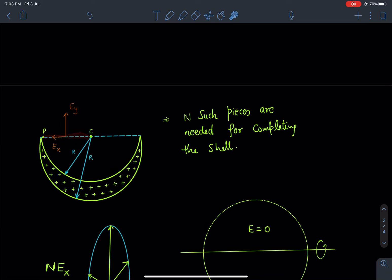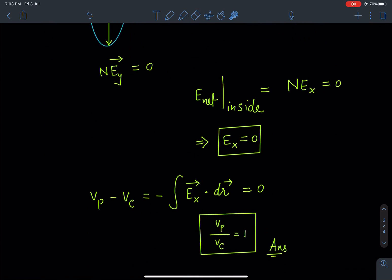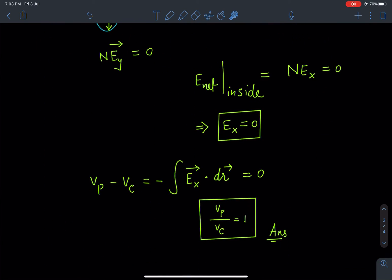So if you are moving from P to C, we are not going to do any work. Or we can simply say Vp minus Vc is equal to minus integral of vector Ex dot dx. But since Ex is zero, from here we are going to get Vp minus Vc equal to zero, which will give us the answer as Vp by Vc as one.